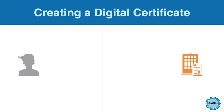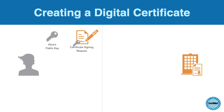Let's say that Alice wants to obtain a new digital certificate. Alice first creates a public-private key pair for the encryption algorithm of her choice. She then creates a message called a Certificate Signing Request, or CSR. The CSR contains Alice's public key, as well as Alice's name and other identifying information, such as an email address or server name. Alice then sends the CSR to the certificate authority of her choice.